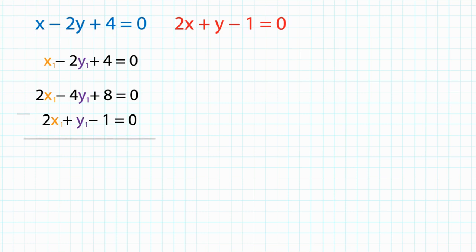And subtract the two expressions to eliminate x1 and solve for y1. Then we can nicely get the value of y1 is equal to 9 over 5.